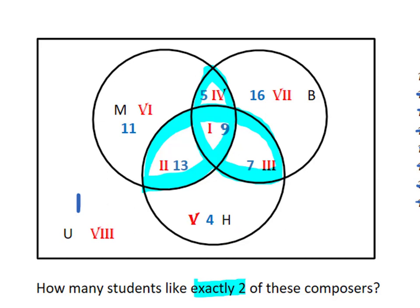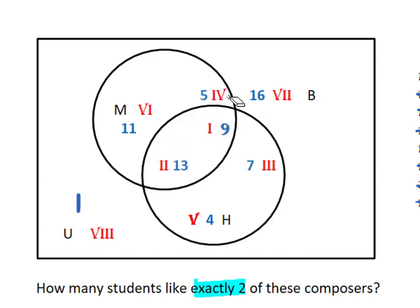So instead, we need only those regions which only like two composers. For example, here region four is students who are in the M and the B group, but not the H group, so they only like Mozart and Beethoven. And here we have a region that falls into the Mozart group and the Haydn group, but not the Beethoven group, so they like exactly two as well.